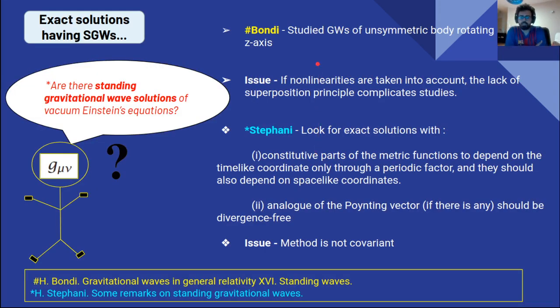We know that gravitational waves were studied in the linear theory as well as exact solutions where the gravitational wave nature is inbuilt in the metric itself. Very early it was Bondi who tried to study standing gravitational waves from an unsymmetric body, but he was studying it in the linear regime, and if non-linearities were taken into account then the studies were complicated.